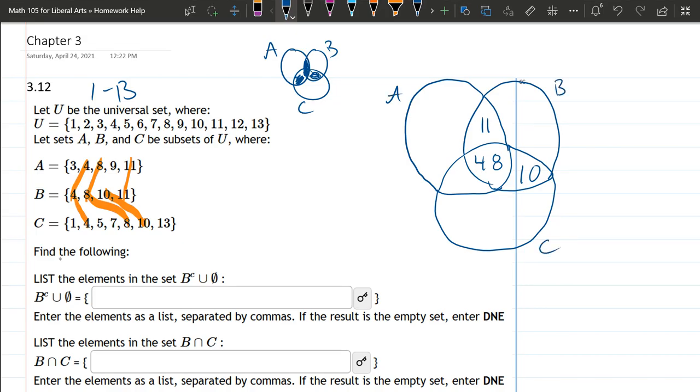Alright, so the elements in A that are not in B or C are 3 and 9. So there's nothing else inside B, so that's just going to be blank. Now C has a few elements: 1, 5, and 13, and 7. Alright, skip that one. 1, 5, 7.